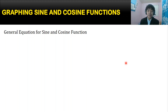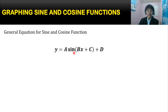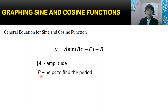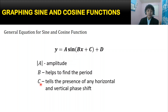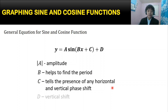Now let's have the general equation for sine and cosine functions: y equals a·sin(bx + c) + d. Here, |a| is the amplitude; b helps us find the period using 2π over b; c tells us the presence of any horizontal phase shift; and d is the vertical shift. This is also applicable to our cosine function.